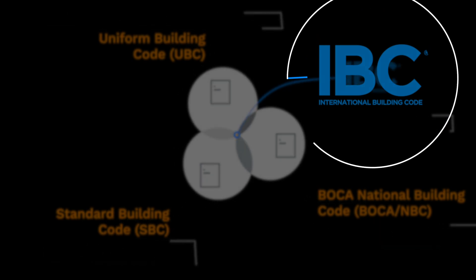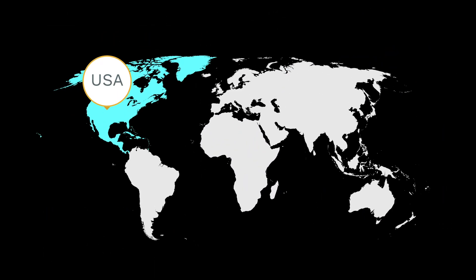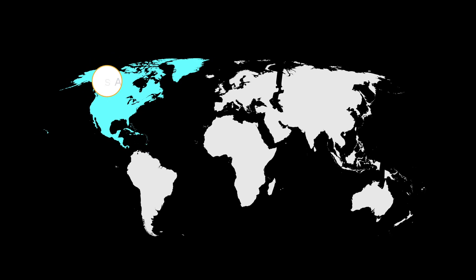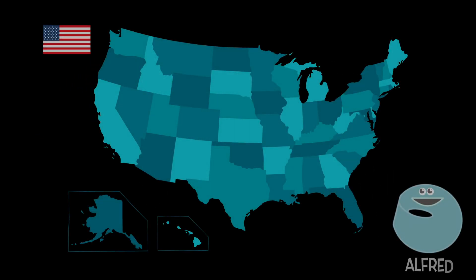These organizations are from the United States, and the IBC is a model code that each state in the USA refers to for their building code. Each state accepted the IBC and modified its parts to adapt to its state's unique design needs, such as climate, topography, and other considerations. The codes vary on the federal, state, and local levels.